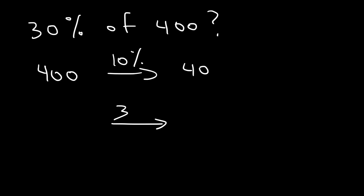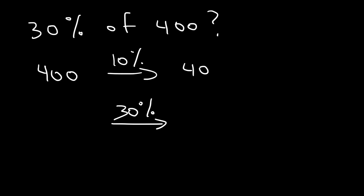30% is 3 times the value of 10. So all we have to do is multiply 40 by 3. If 4 times 3 is 12, then 40 times 3 is 120. So 30% of 400 is 120.